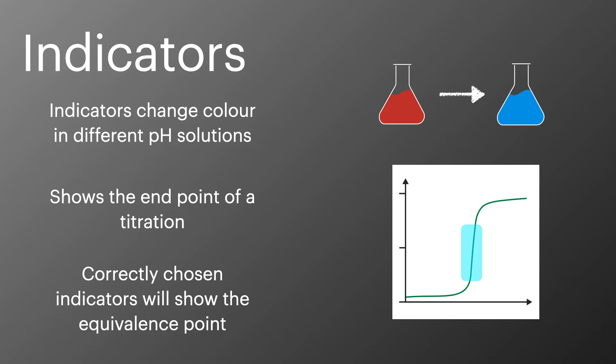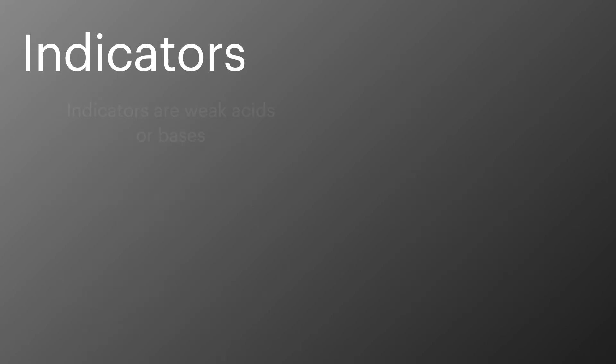In my last video we talked about the equivalence point on a pH curve and this is the point when all the acid or base in the solution has been neutralised. Indicators are usually weak acids or bases which show as different colours depending on whether they're in their neutral form HA or their ionised form A-.